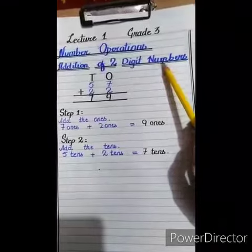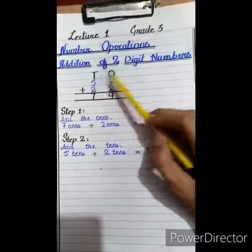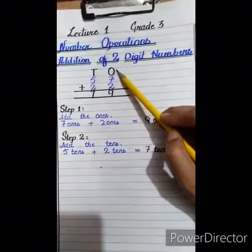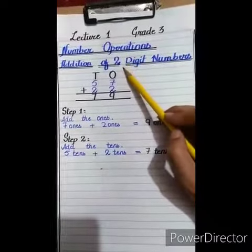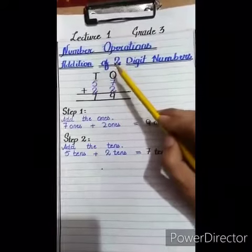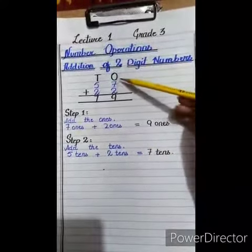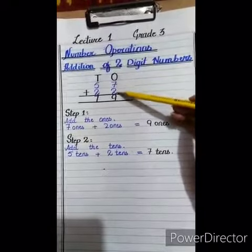As you know that T stands for tens and O stands for ones. Now, addition of 2-digit numbers means that we have to add only tens and ones. In ones, there are 2 values, that is 7 and 2.